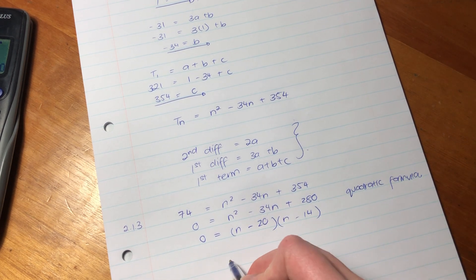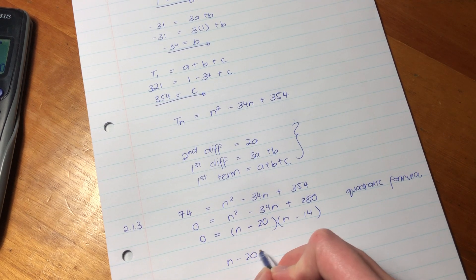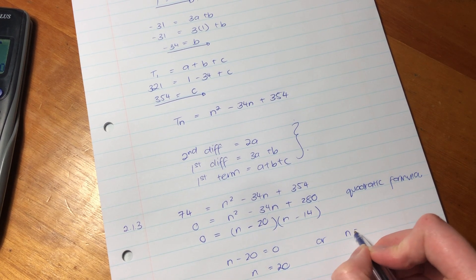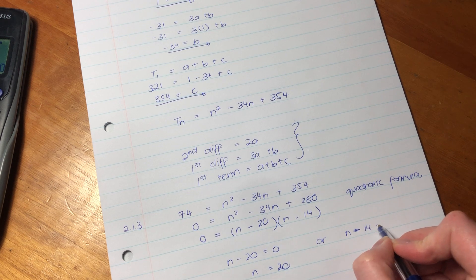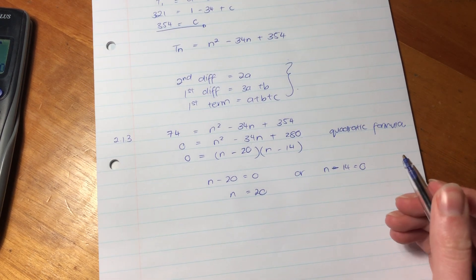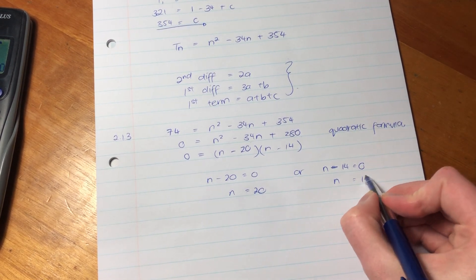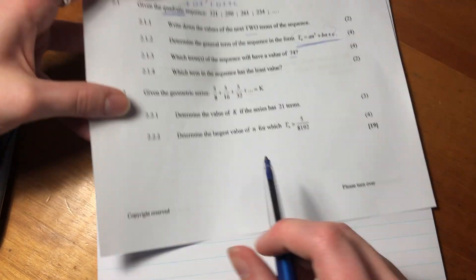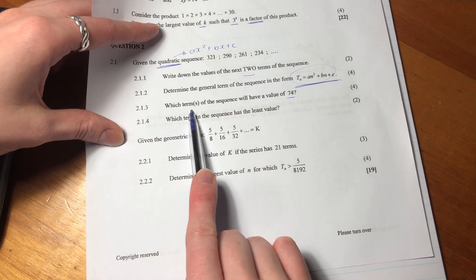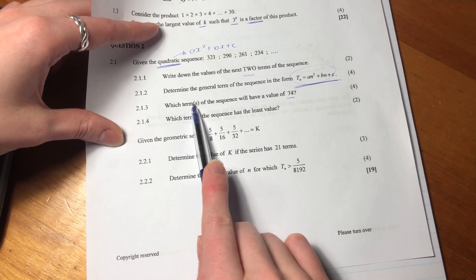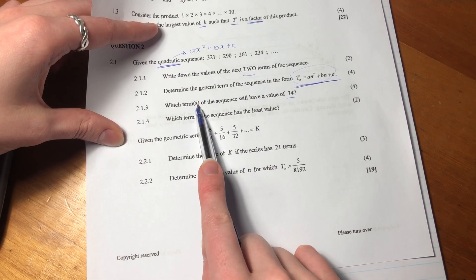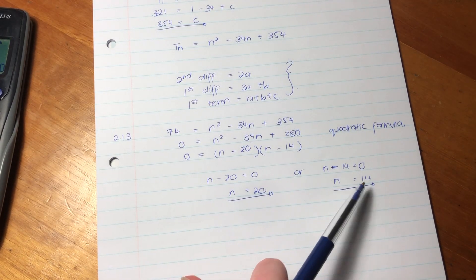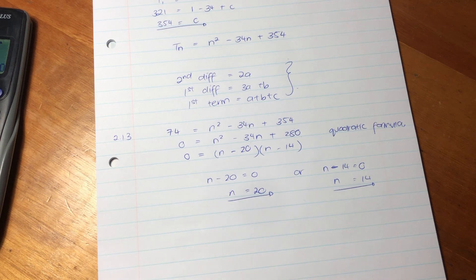Because if I add them together, negative 20, negative 14 gives me negative 34. Then negative 20 times negative 14 is going to give me positive 280. So n minus 20 equals zero. So then n can equal 20. Or n minus 14 equals zero. Then n can equal 14. So it can be n equals 20 or n equals 14. And that's why they said here, which terms of the sequence, because they obviously were sneaky and they knew that there was more than one term. And we know that at n equals 20 and n equals 14, they both equal 74.